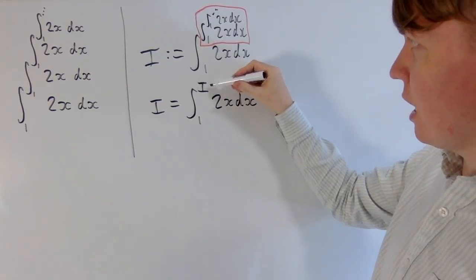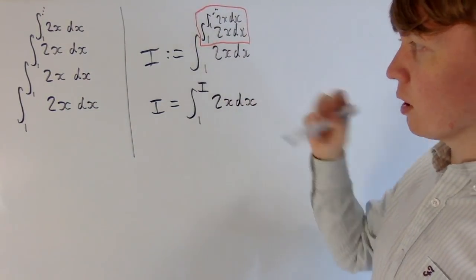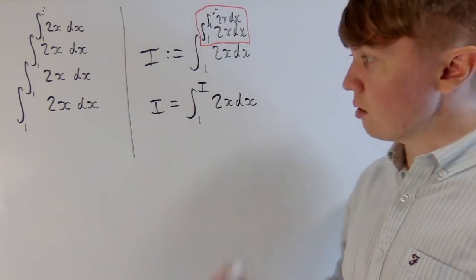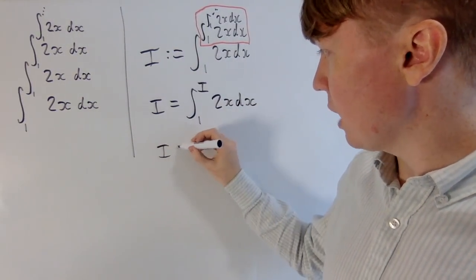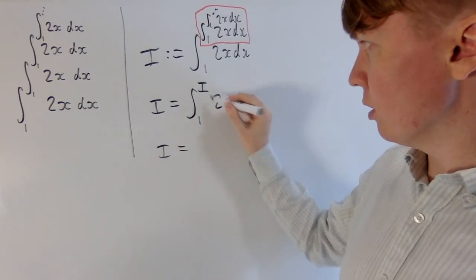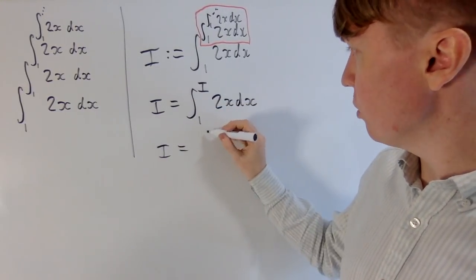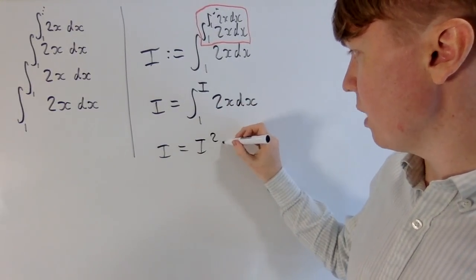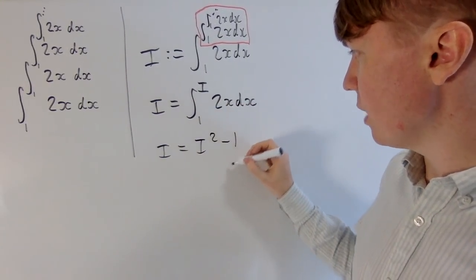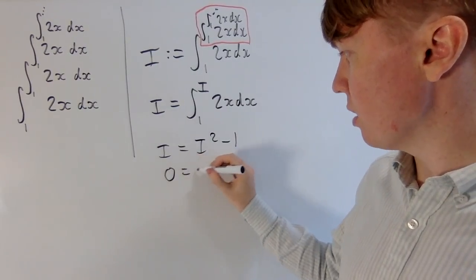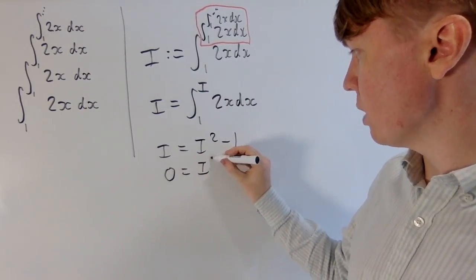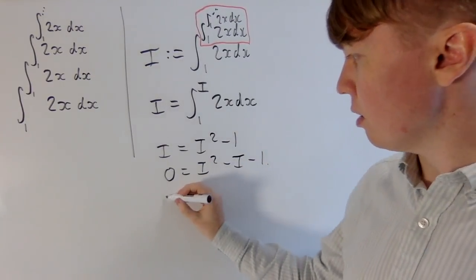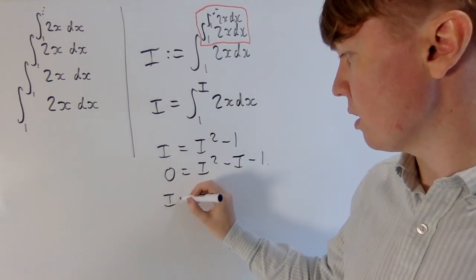This i just matches up with the infinite stack of integrals — and this is really good, because now actually calculating the integral is straightforward. You just get x squared evaluated from 1 to i, giving you i squared minus 1 squared. Then we can rearrange to get 0 equals i squared minus i minus 1.